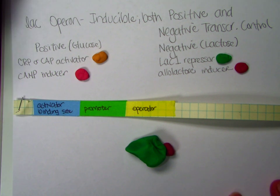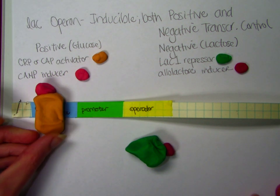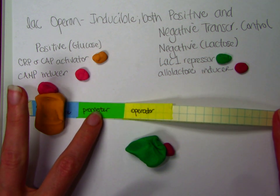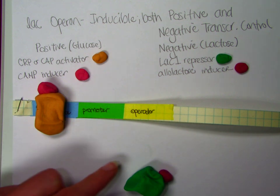So if glucose is absent, the activator will be present. If lactose is present, the repressor will be absent and we'll get transcription.